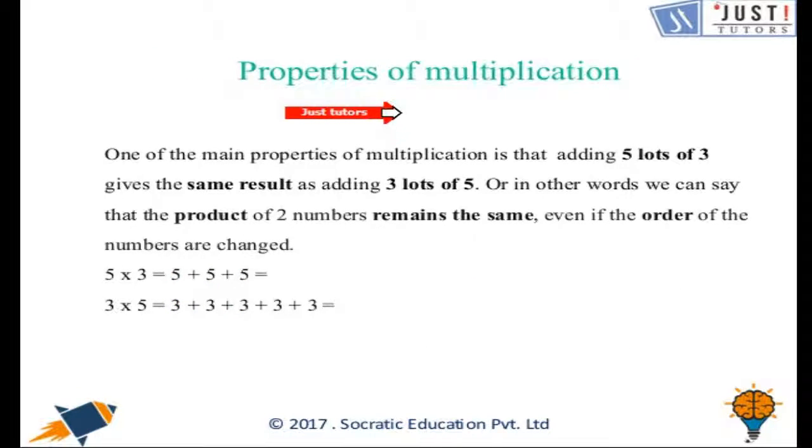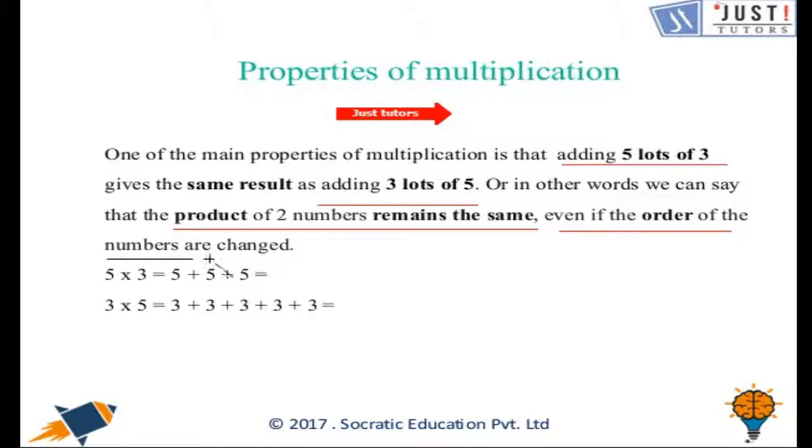Now let's have one of the main properties of multiplication, which is that adding 5 lots of 3 and adding 3 lots of 5 both will give the same result. Or we can say that product of two numbers remains the same even if we reverse the order of multiplication.